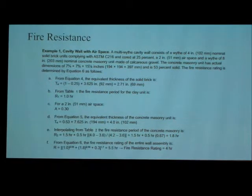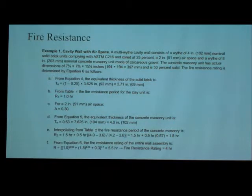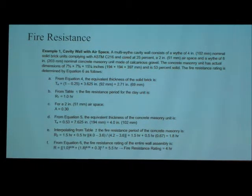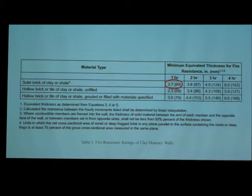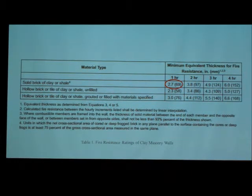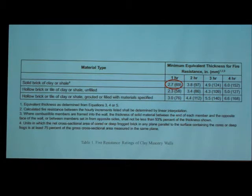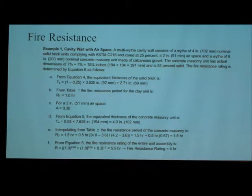First, from division 4, the equivalent thickness of the solid brick is equal to 1 minus the percent void of solid brick, which is 25 percent, multiplied by 3.625, giving 2.7 inches. From table 1, the period of fire resistance for the clay unit — going to table 1 for the solid brick unit with equivalent thickness of 2.7 inches — we get 1 hour for the fire resistance period of the solid brick unit.